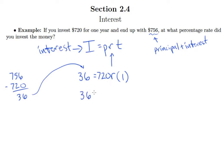So to clean this up, we have 36 equals 720R. I can drop that one out of there. So of course, I'm dividing both sides by 720 to isolate R.